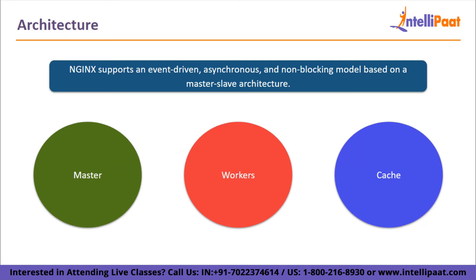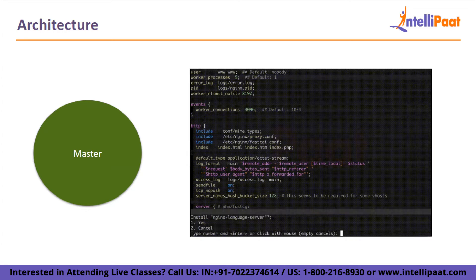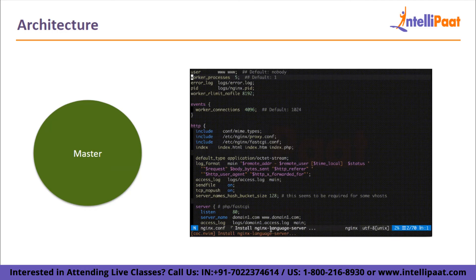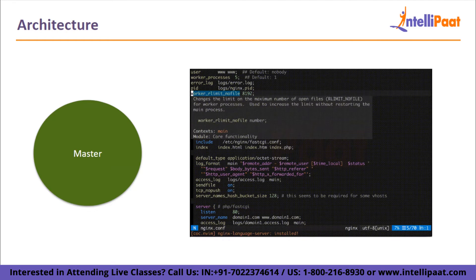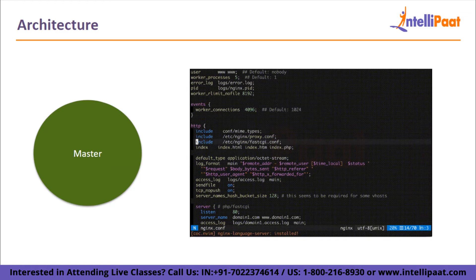Let's get a quick rundown of the Nginx components. First, we have master. Nginx adheres to the master-slave architecture. According to the client's request, it will assign the jobs to the workers. Once the job has been assigned to the workers, the master will move on to the client's next request and not wait for the workers to respond. The master will provide the client with the response as soon as it is received from the workers.